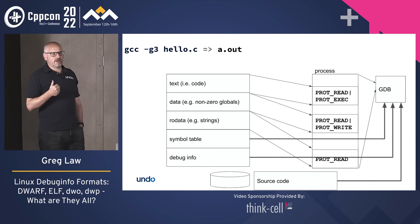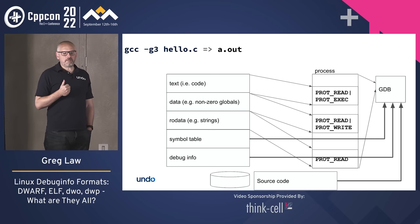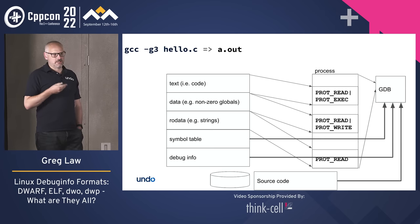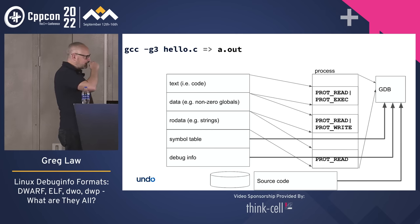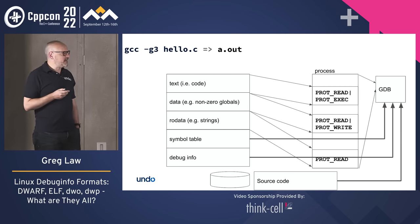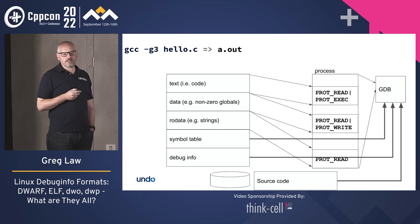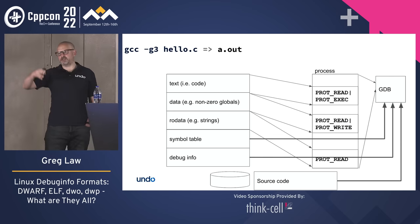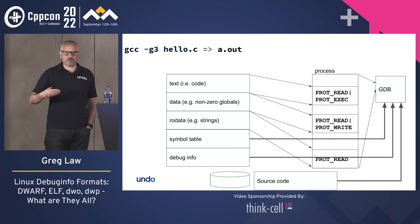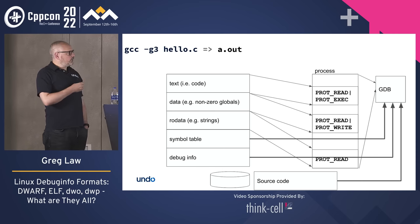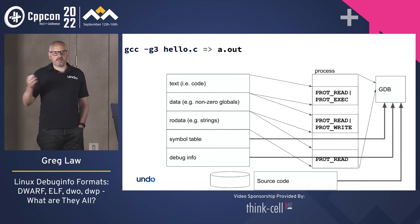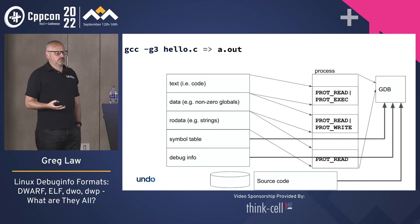I doubt anybody really looks that hard at the debug info for trade secrets. It reminds me of the phrase that people worry about what others think of them far more than people actually think of them. But the other thing is: debug info can be big — very big. It's only going to take up space on disk, not in your running program since it doesn't get mapped. But if you have many copies of your program — say in a Docker image spawned lots of times — even though disk is cheap, the space can be a problem.